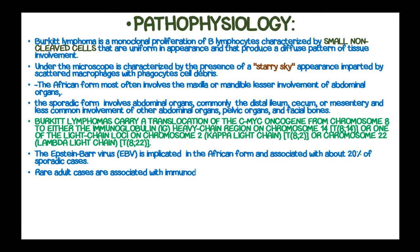Burkitt lymphoma carries a translocation of the C-MYC oncogene from chromosome 8 to the immunoglobulin heavy chain region of chromosome 14, or one of the light chain loci — chromosome 2 (kappa light chain) or chromosome 22 (lambda light chain). The rare adult cases are associated with immunodeficiency, particularly acquired immunodeficiency syndrome (AIDS).